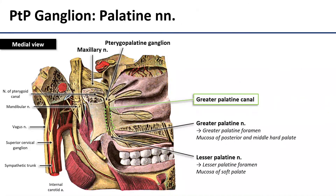That sphenopalatine foramen took us into the nasal cavity, and now we travel inferiorly to the oral cavity. The greater and lesser palatine nerves travel through the greater palatine canal from the pterygopalatine fossa, then pass through the greater and lesser palatine foramina to reach the palate. The greater palatine nerve travels through the greater palatine foramen and then anteriorly on the hard palate to innervate the mucosa up to about the first premolar. The lesser palatine nerve travels through the lesser palatine foramen and supplies the mucosa of the soft palate.